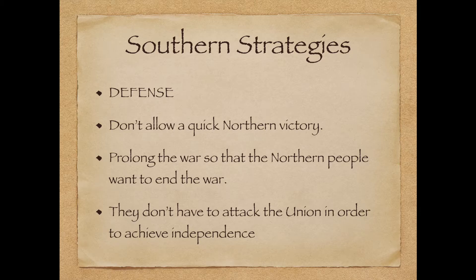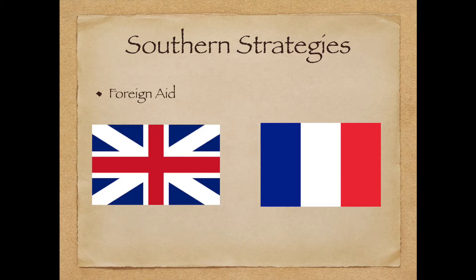In contrast to the North, the South simply needed to fight a defensive war, and with the occasional attack on Northern forces, the South did utilize a defensive strategy. The goal was to prevent an easy Northern victory and cause the public to lose interest — if the South could continue the war, the Northern public would lose interest and encourage their politicians to seek peace and let the South go. Finally, the South was hoping to depend on foreign aid; if they could get the British and the French to assist them, the South could quite possibly work their way to victory and officially independence.